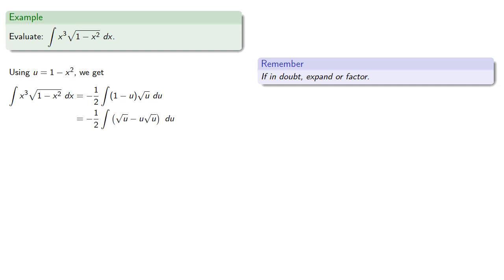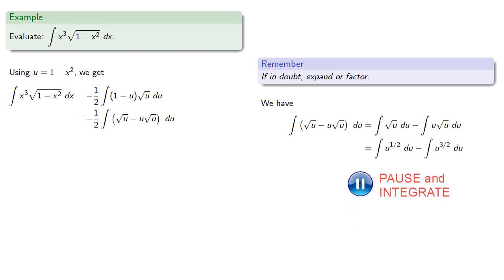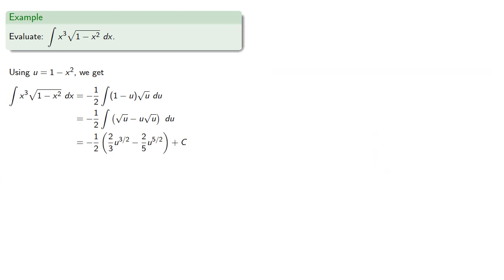And now we have a difference. So remember, the integral of a sum or difference is the sum or difference of the individual pieces. And so we get... And rewriting using our exponential form... And integrating. And remember, put things back where you found them. So u was 1 minus x squared, so we'll replace.